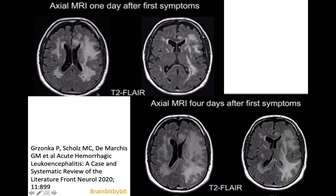This is a patient with MRIs only three days apart. On the initial scan you can see the patchy white matter abnormalities resembling ADEM, but after three days there is very rapid progression of the white matter abnormalities and a lot of brain edema.